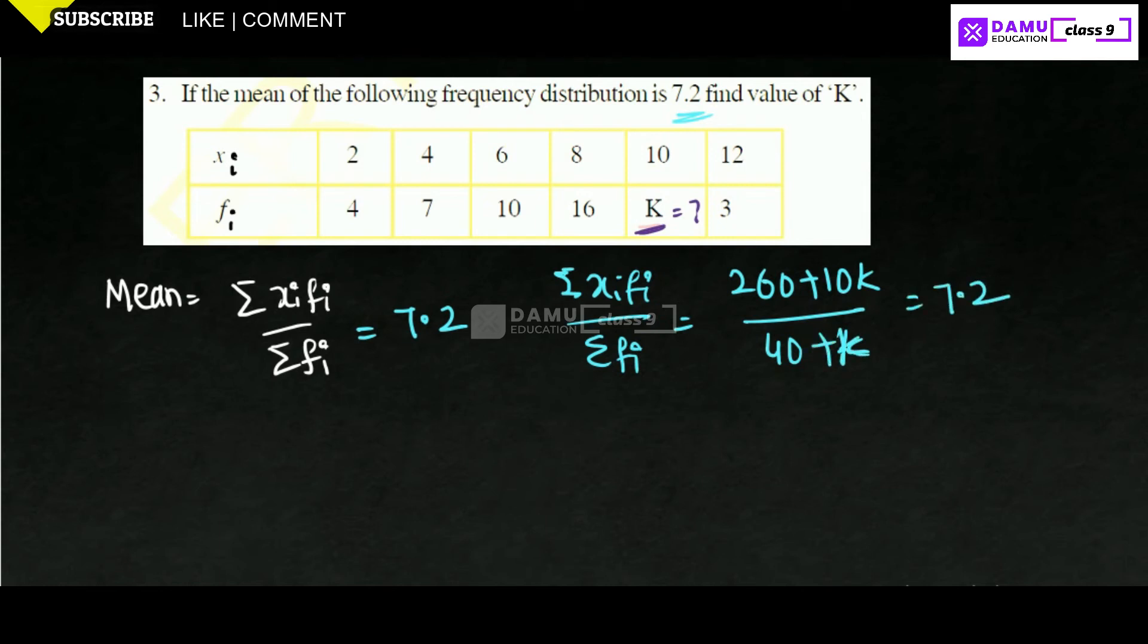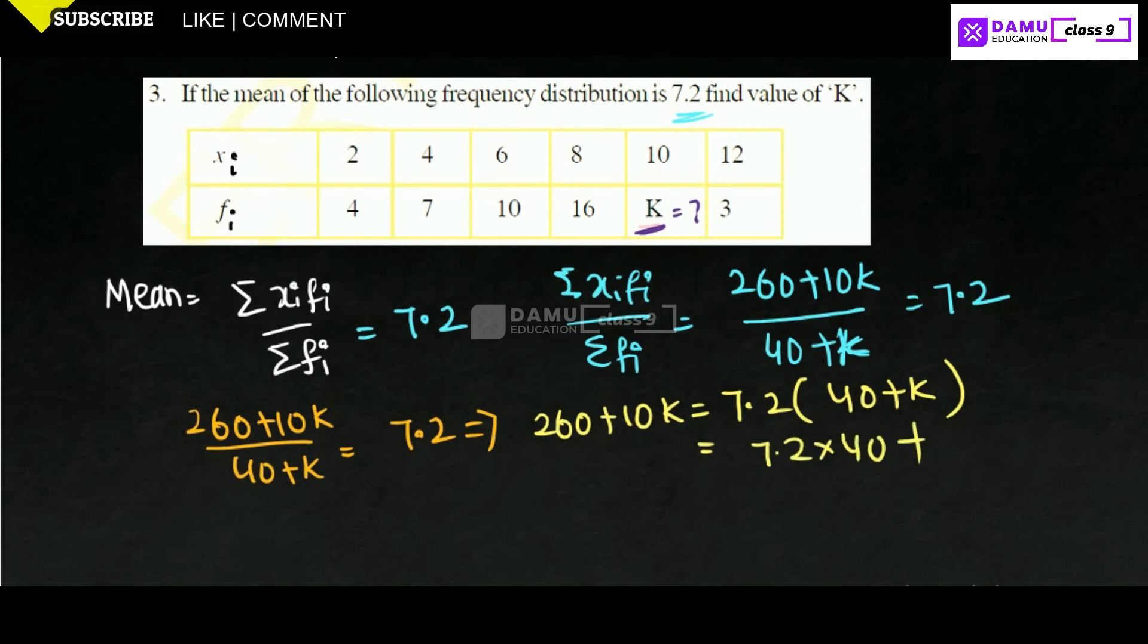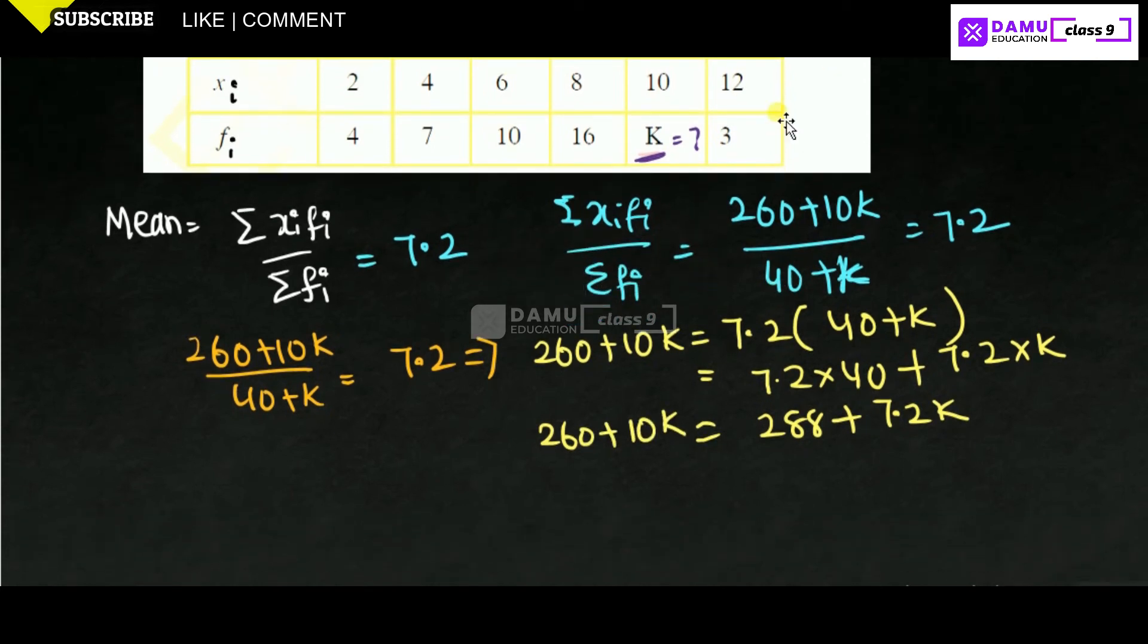Let us write all these steps again. 260 plus 10k will be equal to 7.2 into 40 plus k. 7.2 into 40 plus 7.2 into k. Here 260 plus 10k, that is the value.